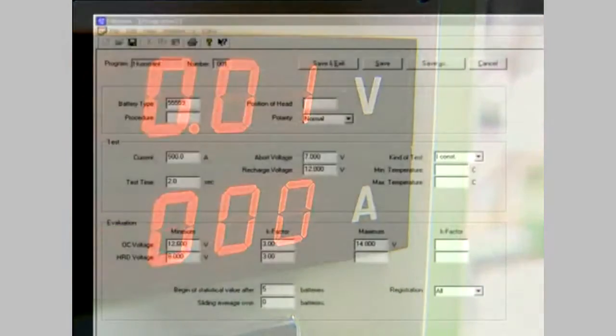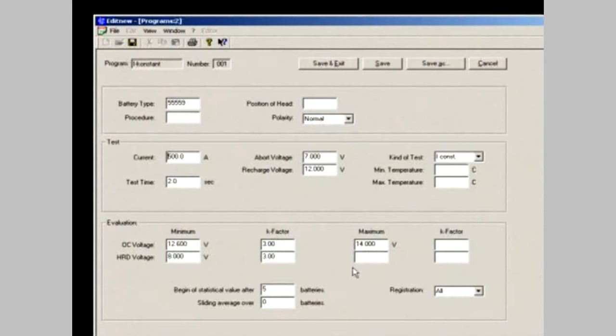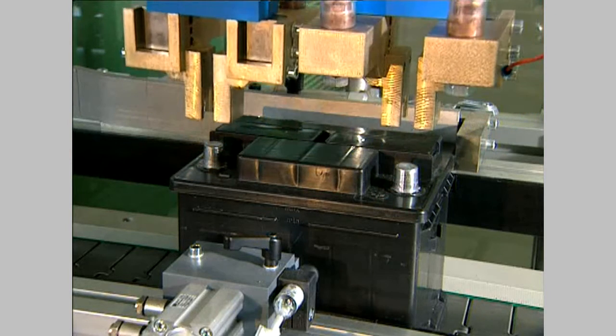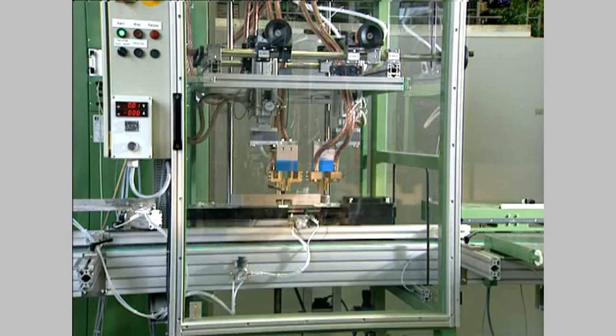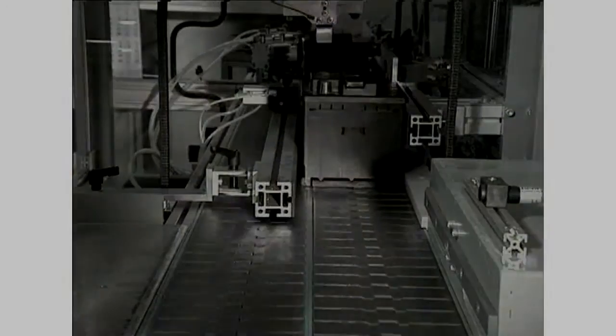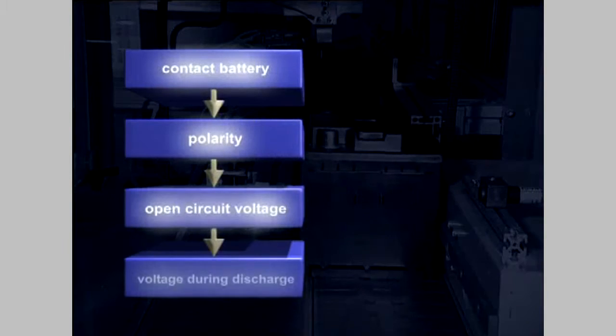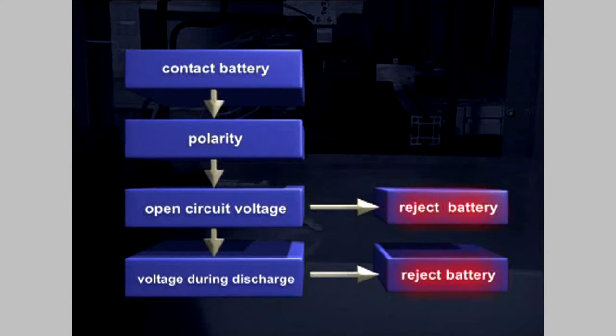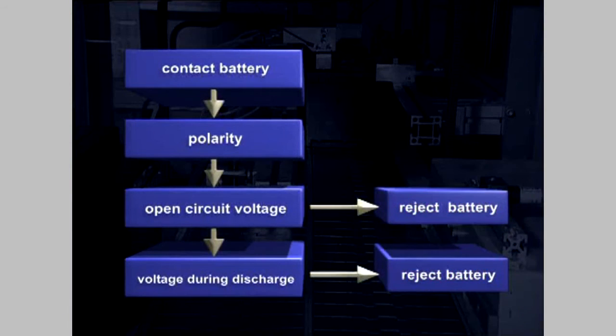Current, duration, and discharge voltage are set as nominal values in the test program. Open circuit voltage and voltage during discharge are the most important test criteria. The battery is rejected after a test failure on these tests.